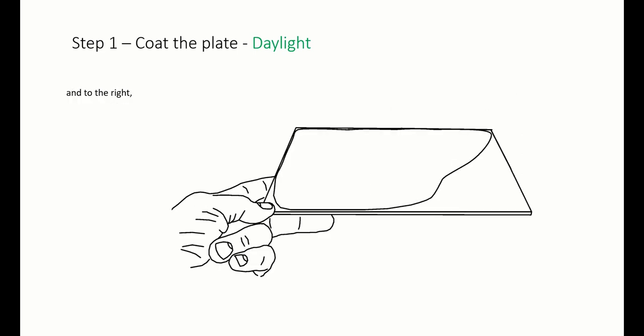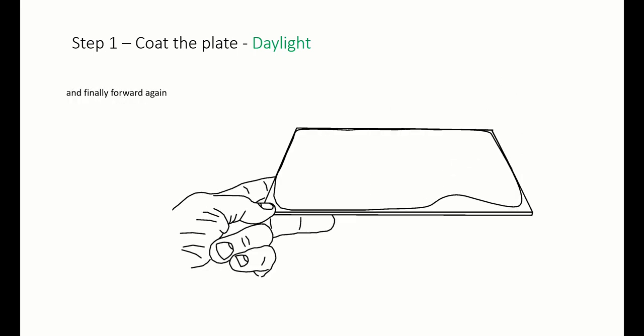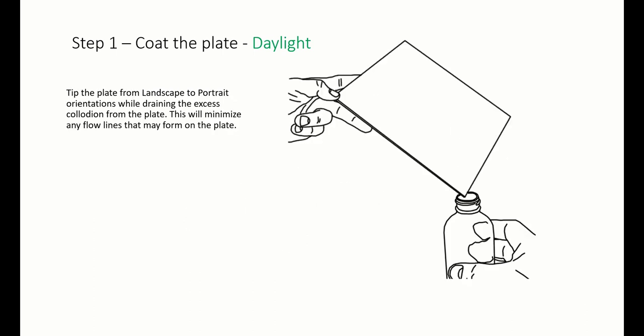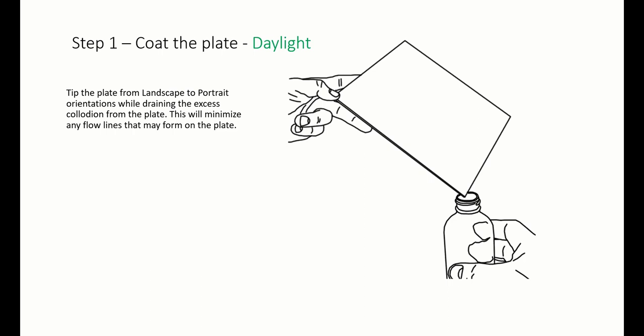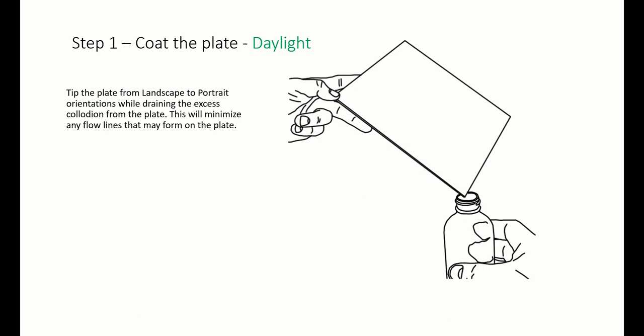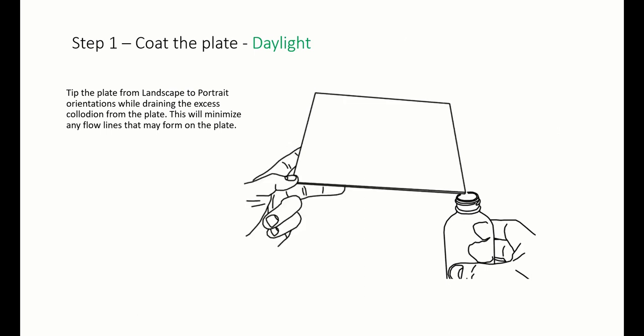Then tip the plate away and to the right and finally forward again to drain the excess collodion back into the bottle. Tip the plate from landscape to portrait orientations while draining the excess collodion from the plate. This will minimize any flow lines that may form in the collodion film.